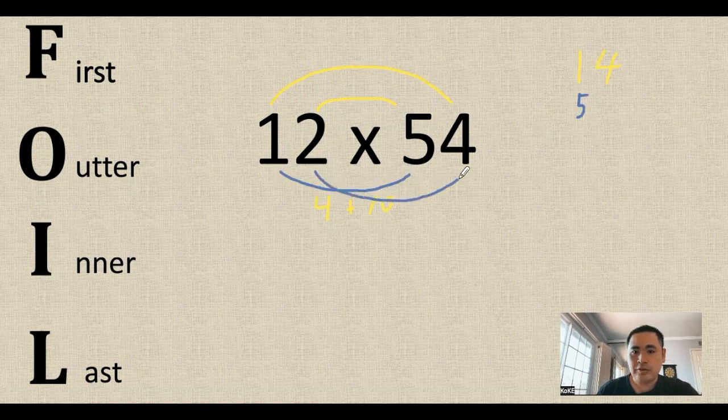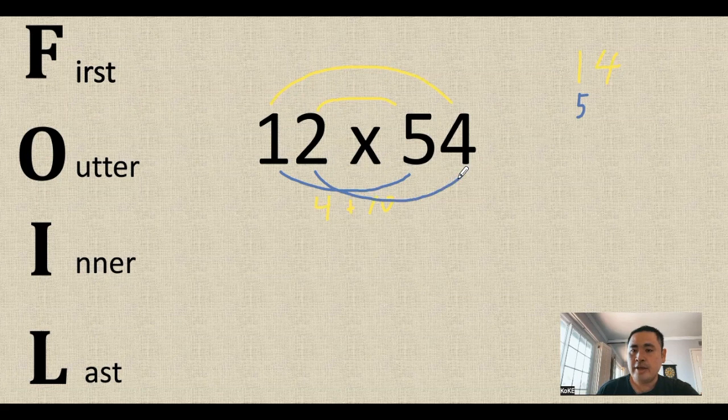When we multiply the 2 and the 4, we're going to get the 8. But instead of writing the 8 below the 4, we need to put a placeholder of 0 below the 4 and then write the number 8.